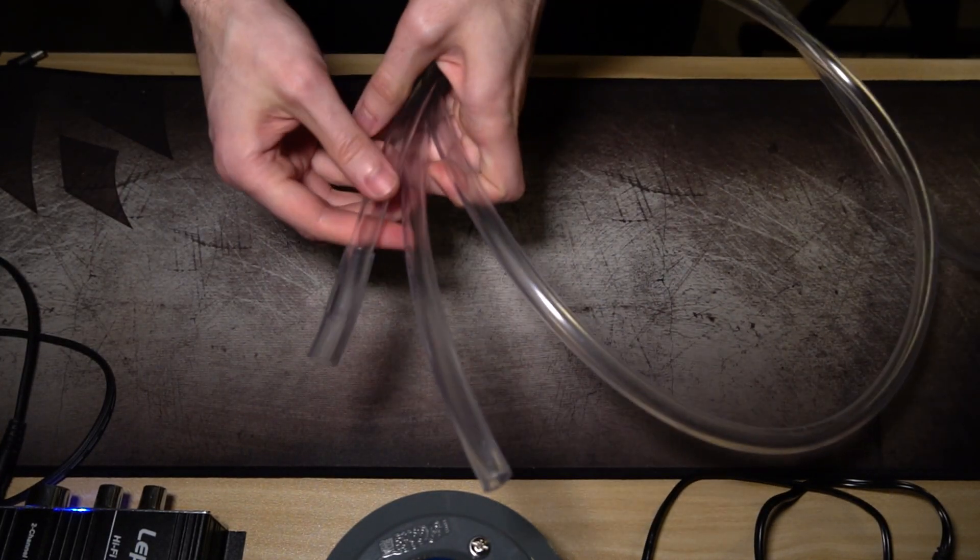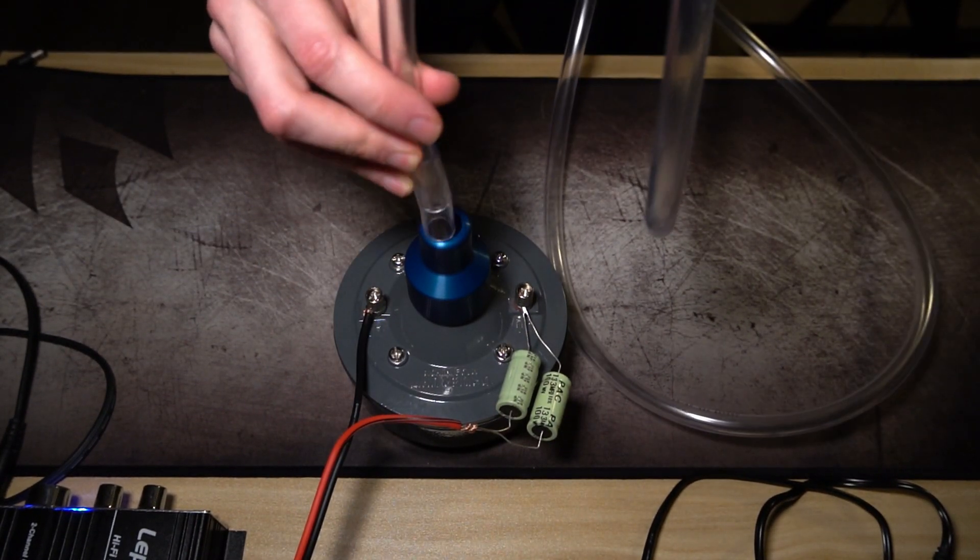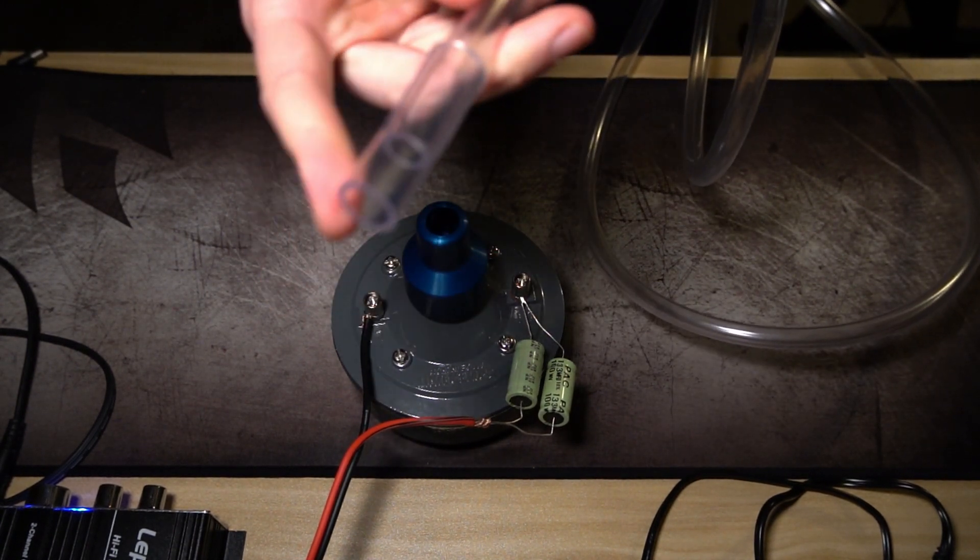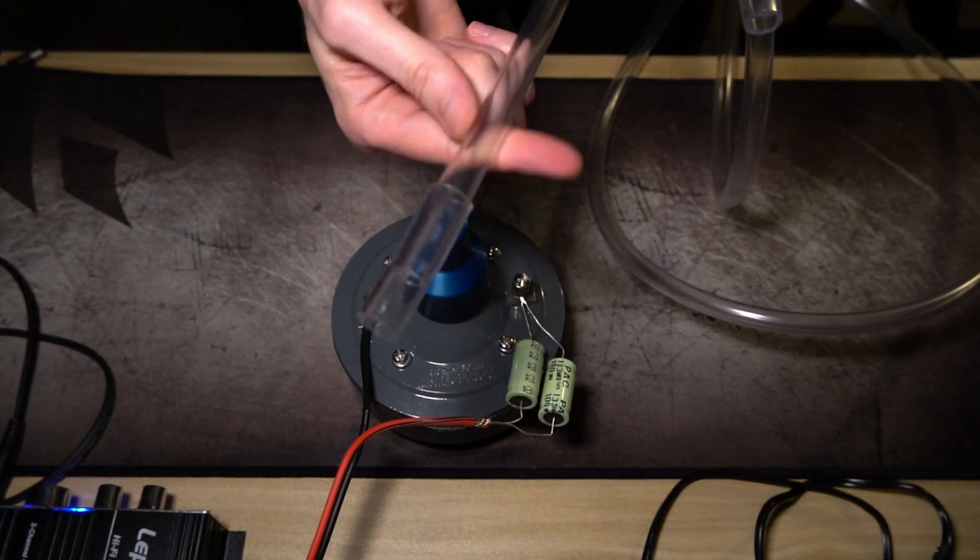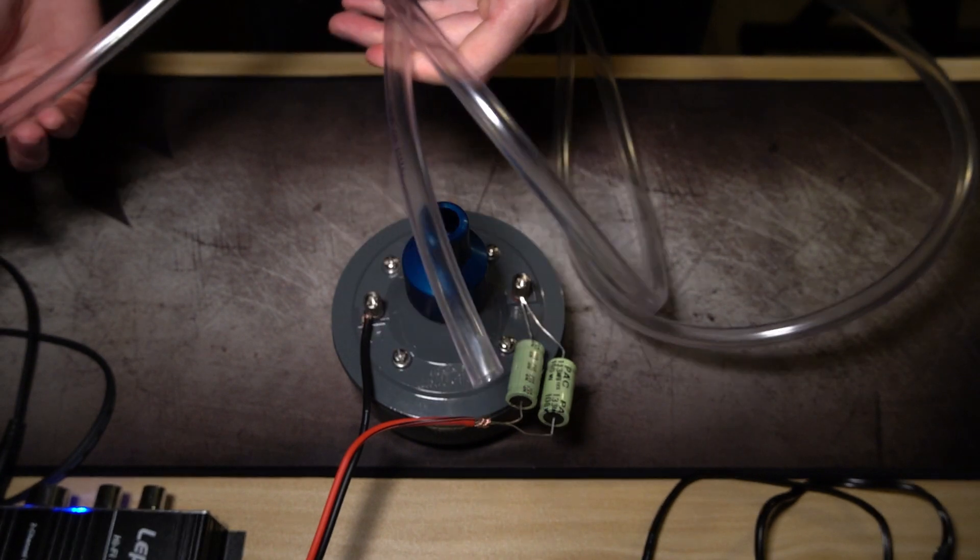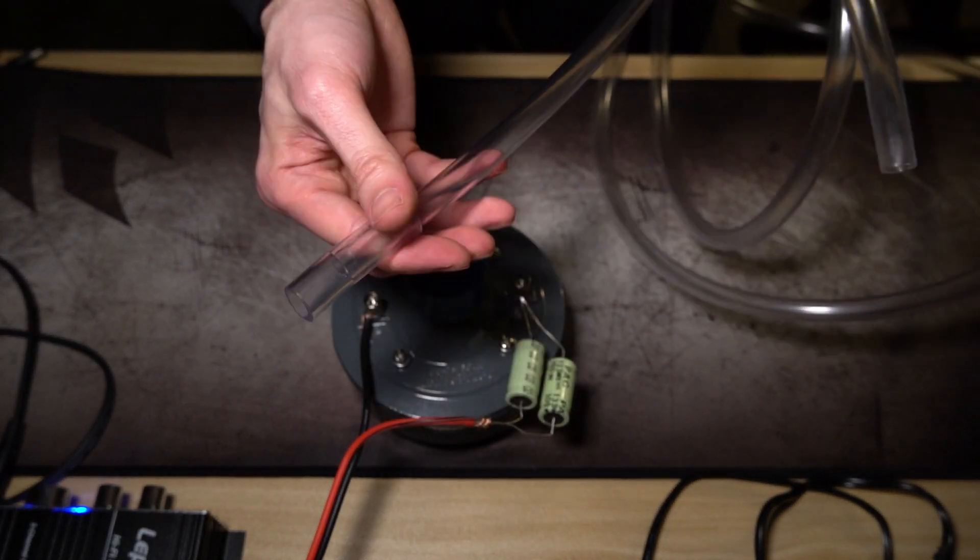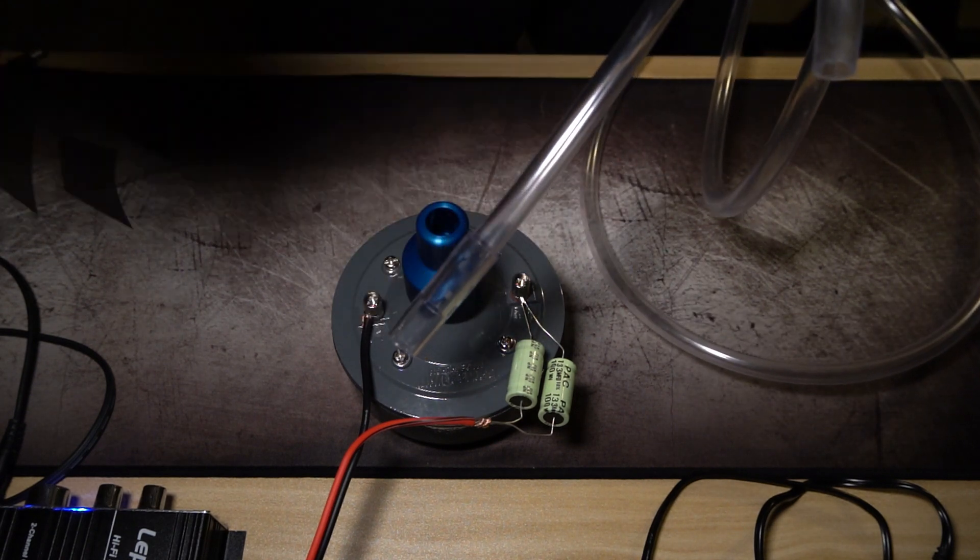Once you get your vinyl tubing, you just want to put that in there where it's snug. The reason it's snug is because I got that other piece to fit into the three-eighths. If you just use the three-eighths inner diameter, it's going to fit but it's going to be loose and sound is going to escape.